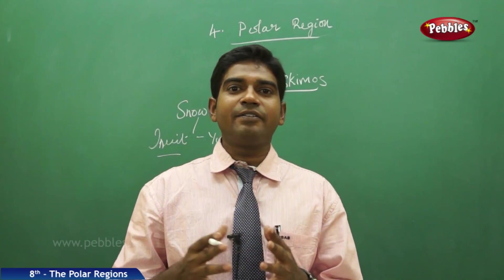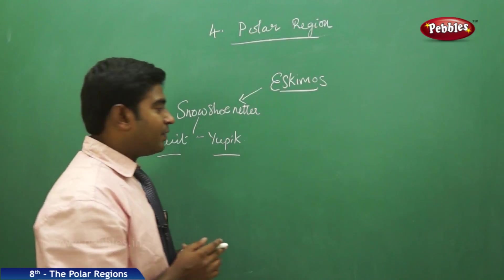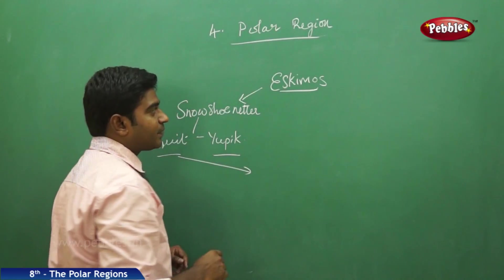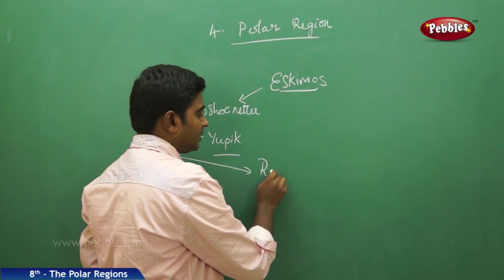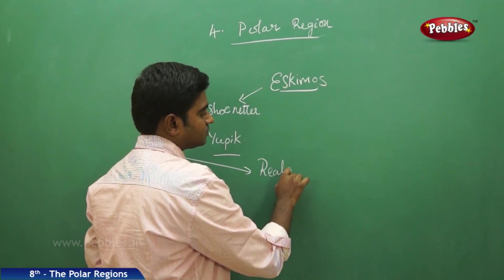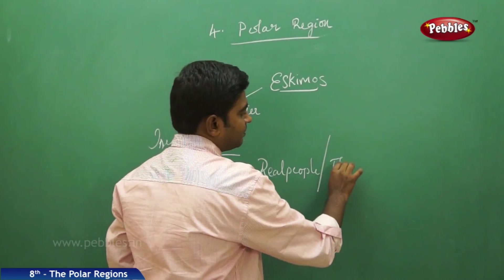Eskimos are broadly divided into two categories, those are Inuit and Yupik. The literal meaning of this Inuit or Yupik in the Eskimos language is the real people or the people.